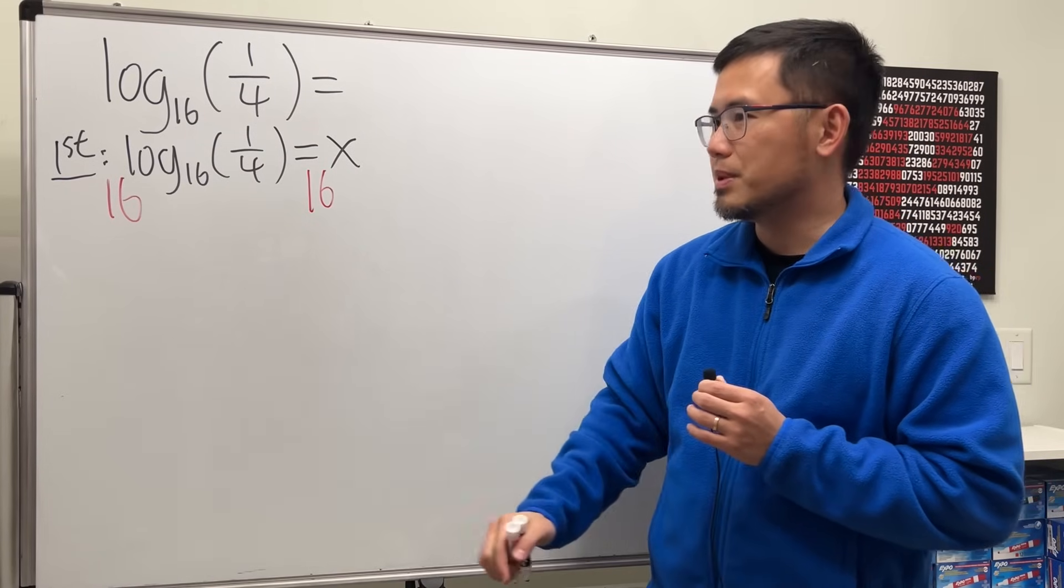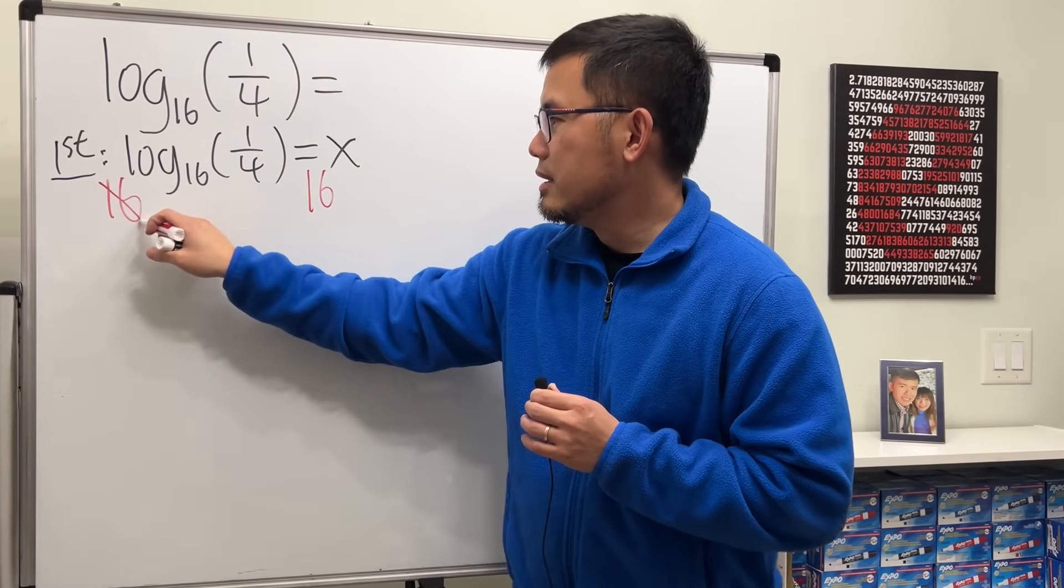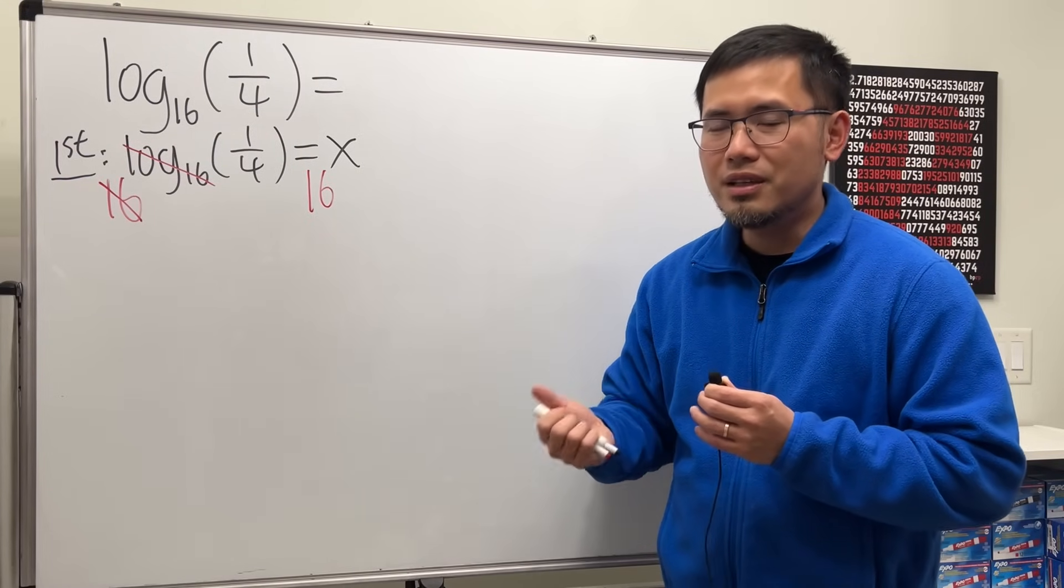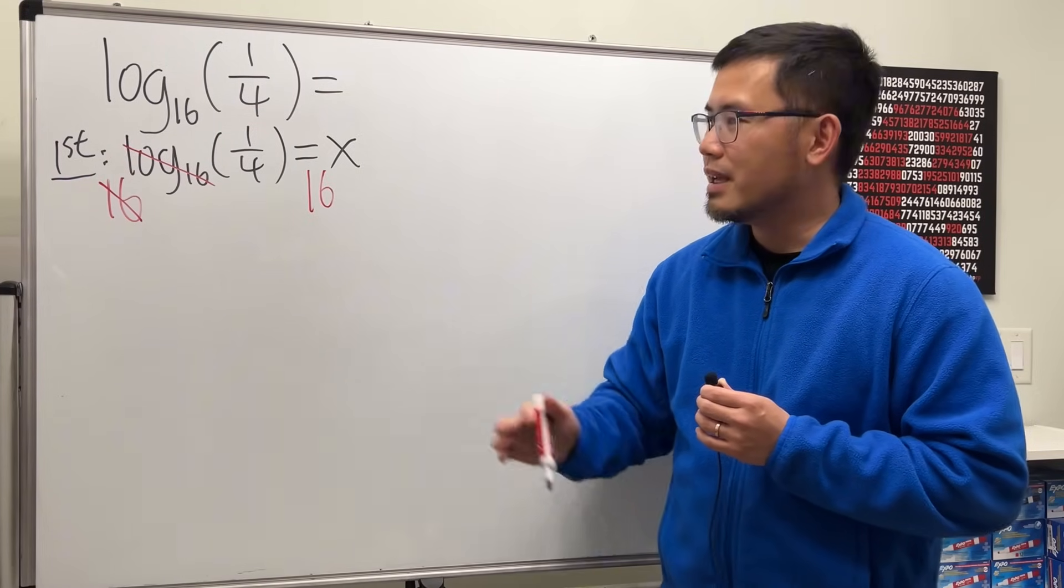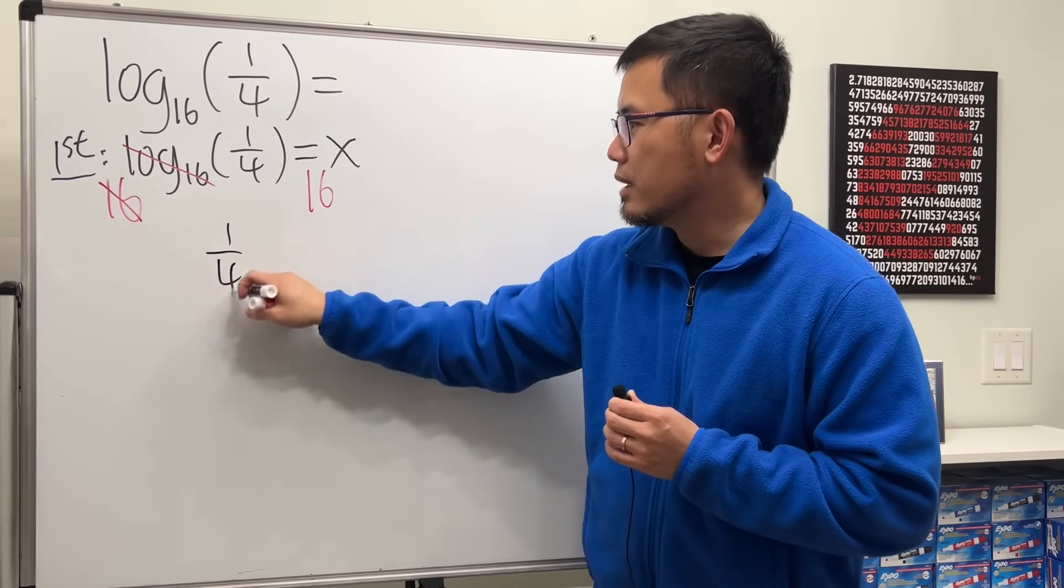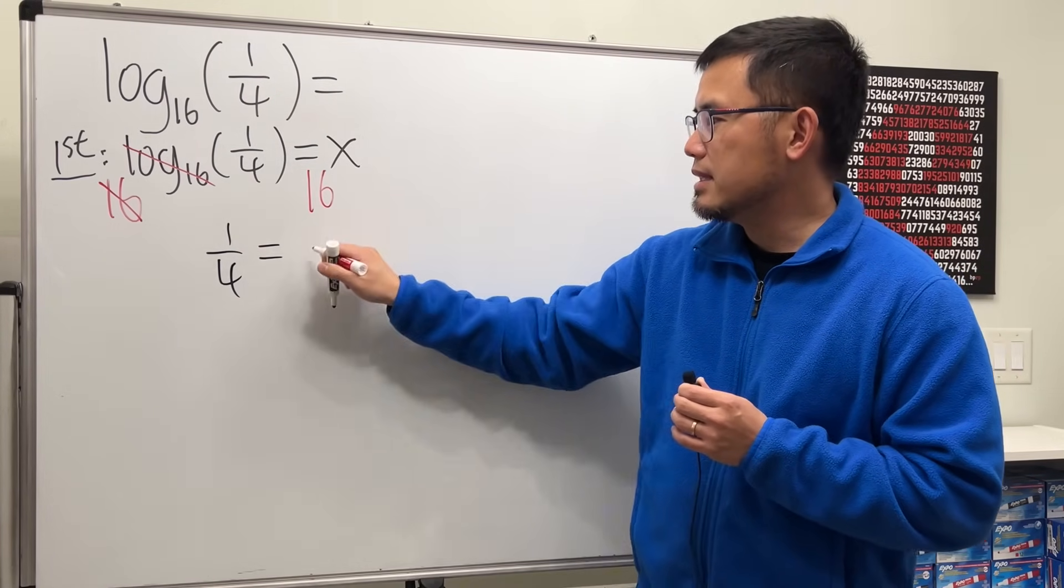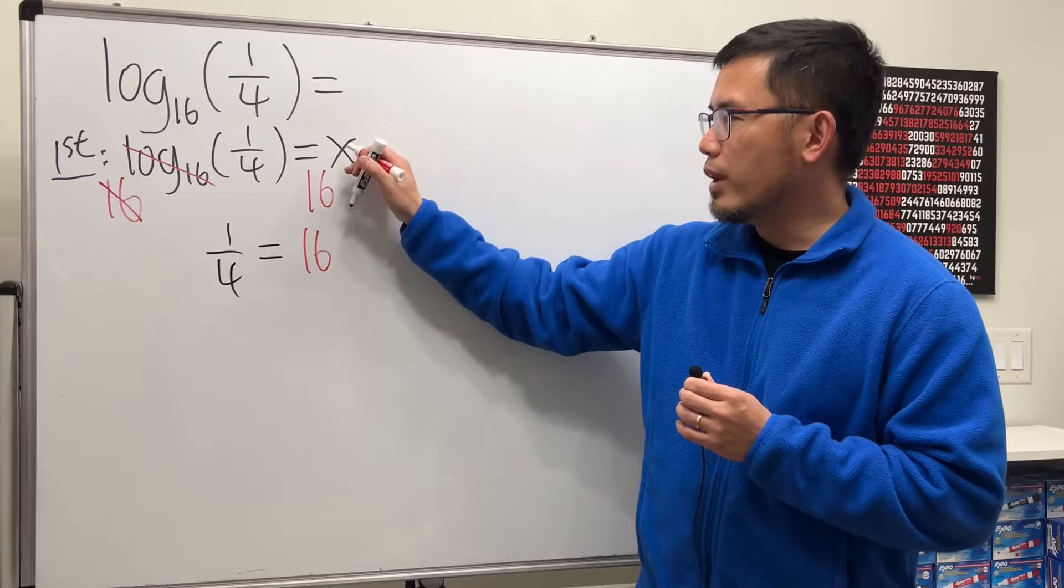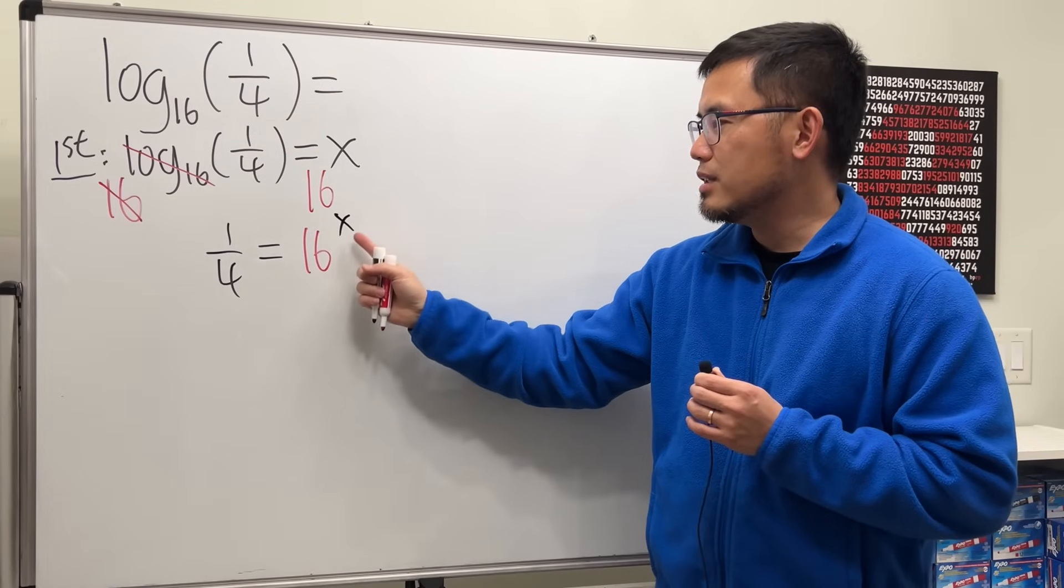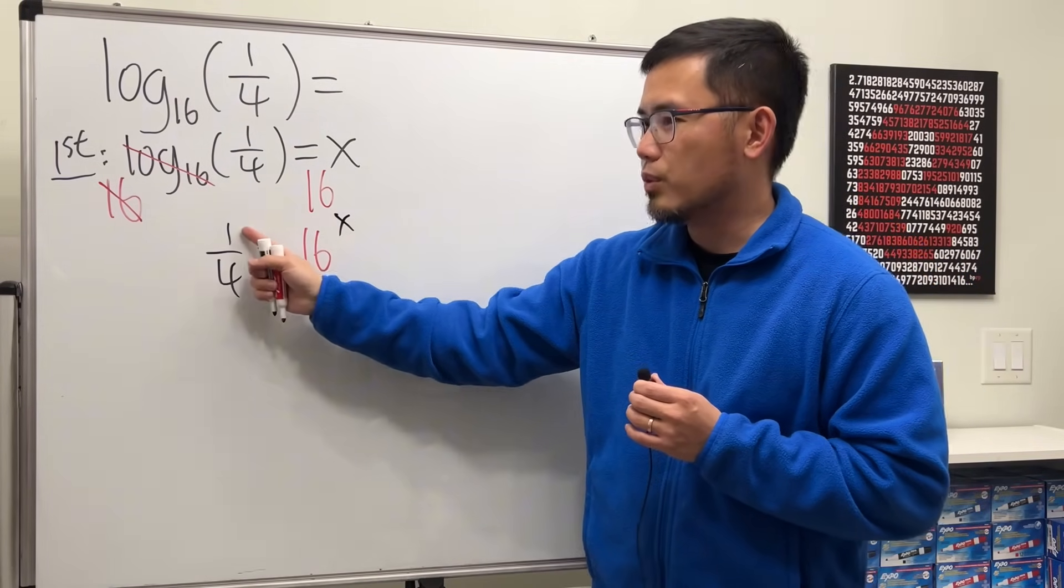And then go ahead and do that, 16 to that power. And the reason is because this way, this and that can cancel because log is the inverse of exponential. And now you can see here we have 1 over 4, and that's equal to 16, raised to the x power. And that's exactly what I said: 16 raised to the x power equals 1 over 4.